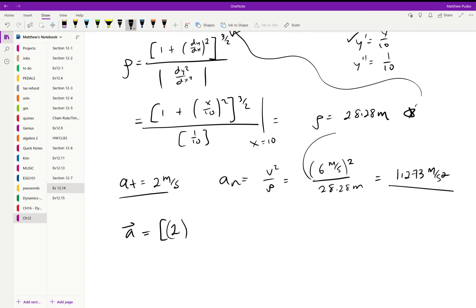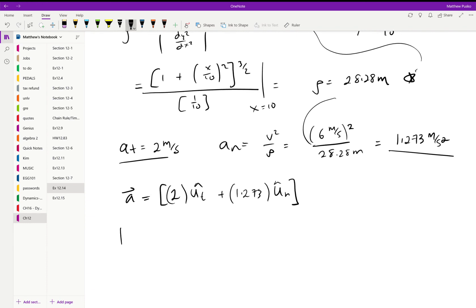They wanted to know the magnitude, so we can say square root of 2 squared plus 1.273 squared. That gives us 2.37 meters per second squared.